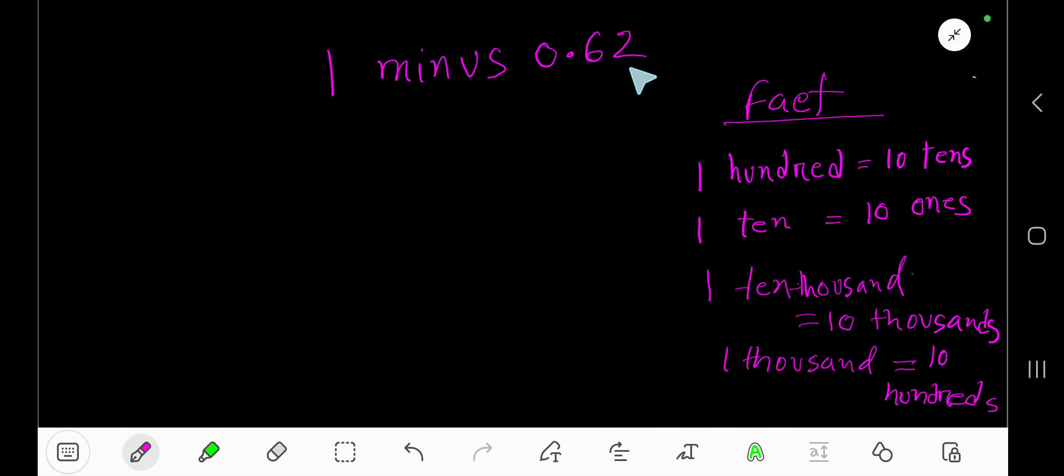1 minus 0.62. This number has two digits after the decimal, but this whole number, 1, doesn't have any decimal part. So we need to convert this whole number into a decimal by adding two